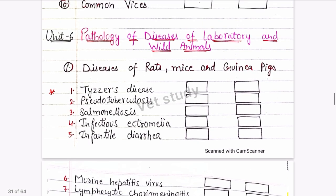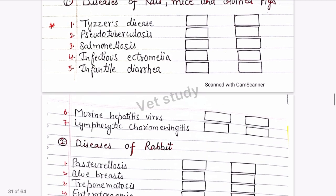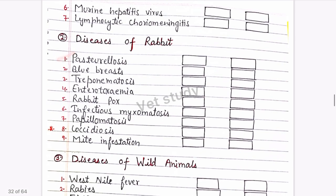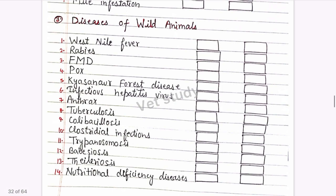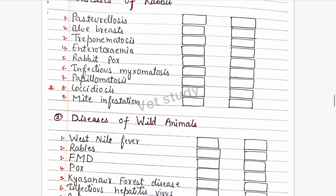Unit 6 is Pathology of Diseases of Laboratory and Wild Animals. The most important disease is Tyzzer's disease. Pasteurellosis in rabbits is important. Remember the names of rabbit diseases: pasteurellosis, blue breast. For wild animals, remember West Nile Fever, rabies, and Kyasanur Forest Disease. These are the important questions of pathology. Thanks for watching — please like, subscribe to VetStudy, and check out other subject videos.